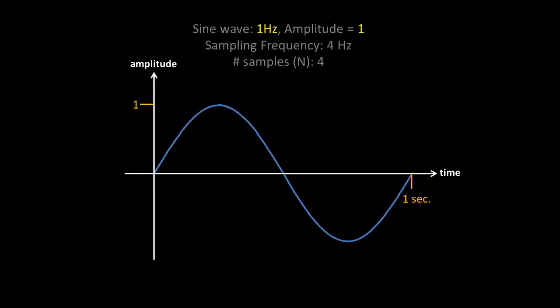Let's look at an extremely simple example. Say we are sampling a 1 Hz sine wave with an amplitude of 1. If our sampling frequency is 4 Hz and the number of samples we take is 4, we can get the following values if we sample at the right time.